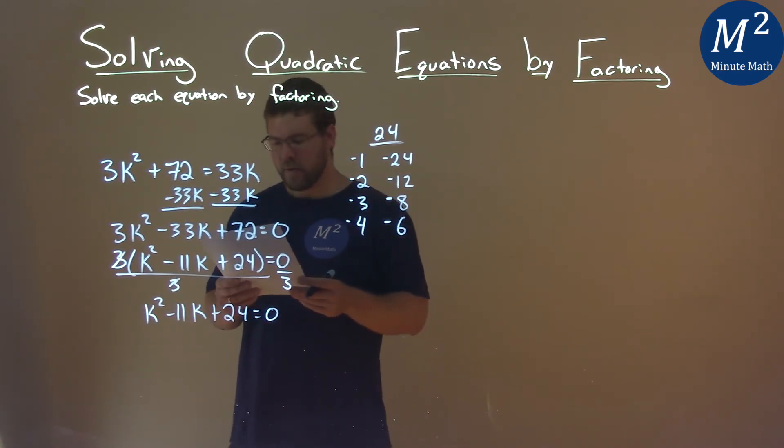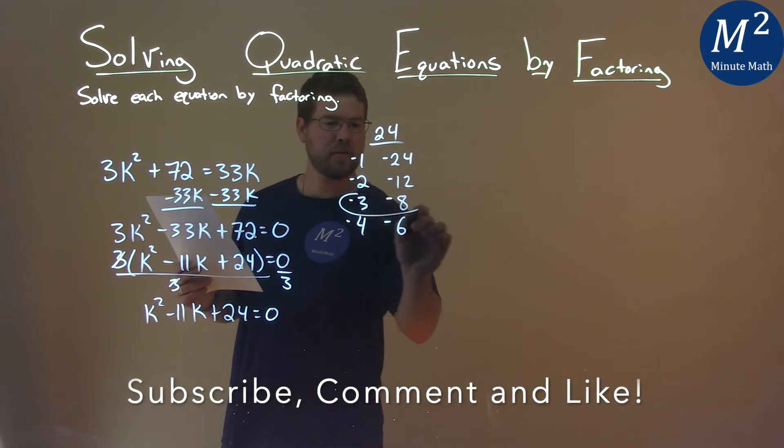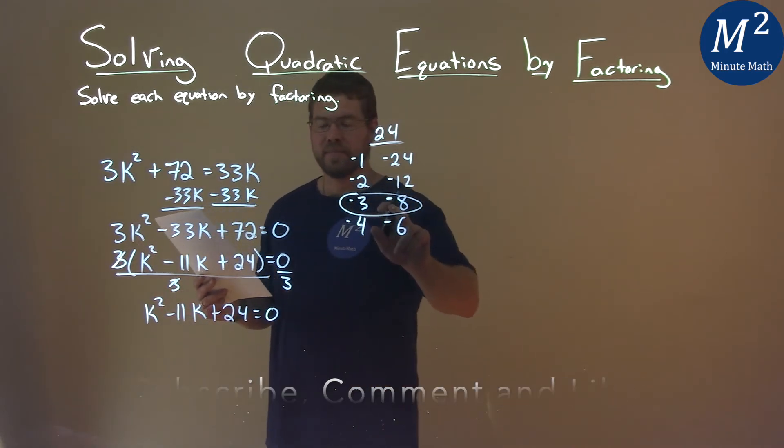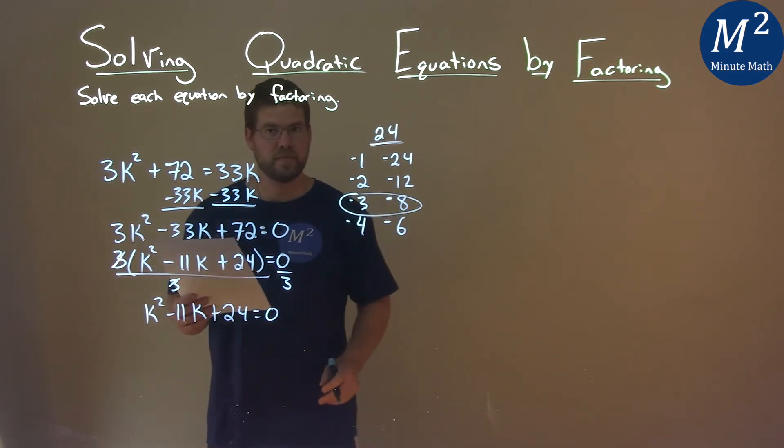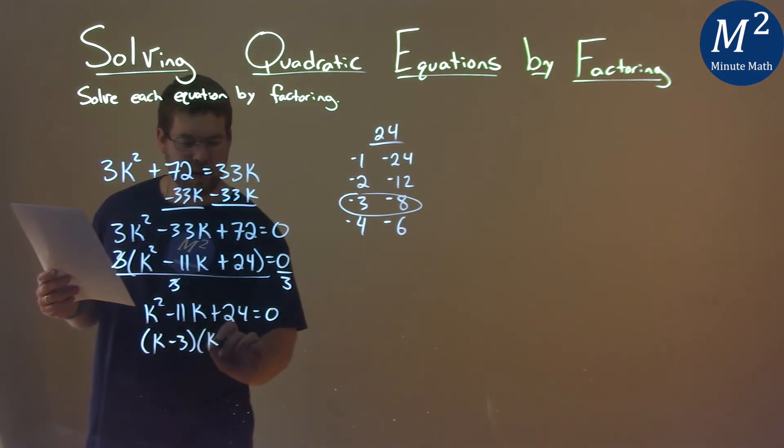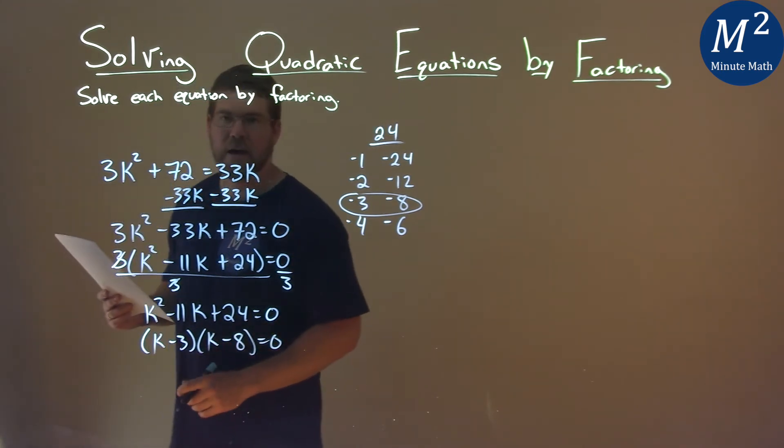So now I'm trying to find which numbers they are and that is actually negative 3 and negative 8. Negative 3 plus negative 8 is negative 11. So this breaks down to be k minus 3 times k minus 8 equals 0, and there we have it in factored form.